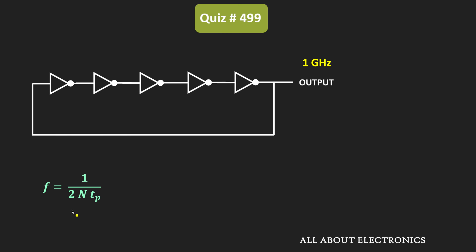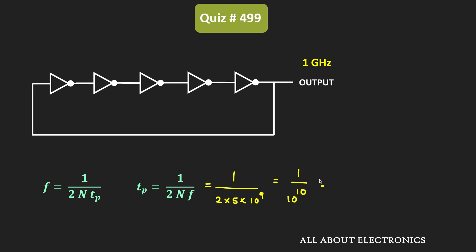If we rearrange this expression, we can write Tp = 1 divided by 2N times f. That means Tp = 1 divided by 2 times 5 times 1 GHz, which is equal to 1 divided by 10 to the power 10. That is equal to 100 × 10⁻¹² seconds, or we can say the propagation delay of each inverter is equal to 100 picoseconds. This is the propagation delay when the ring oscillator is operating at 1 GHz.